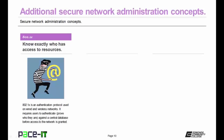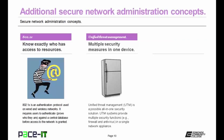802.1x is an authentication protocol used on wired and wireless networks. It requires users to authenticate — that is, prove who they are — against a central database before access to the network is granted. 802.1x is a good way to keep your network safe from nefarious users. You might also want to consider unified threat management — multiple security measures in one device. UTM systems provide multiple security functions in a single network appliance. Just be aware that a UTM system may also create a single point of failure for your network.